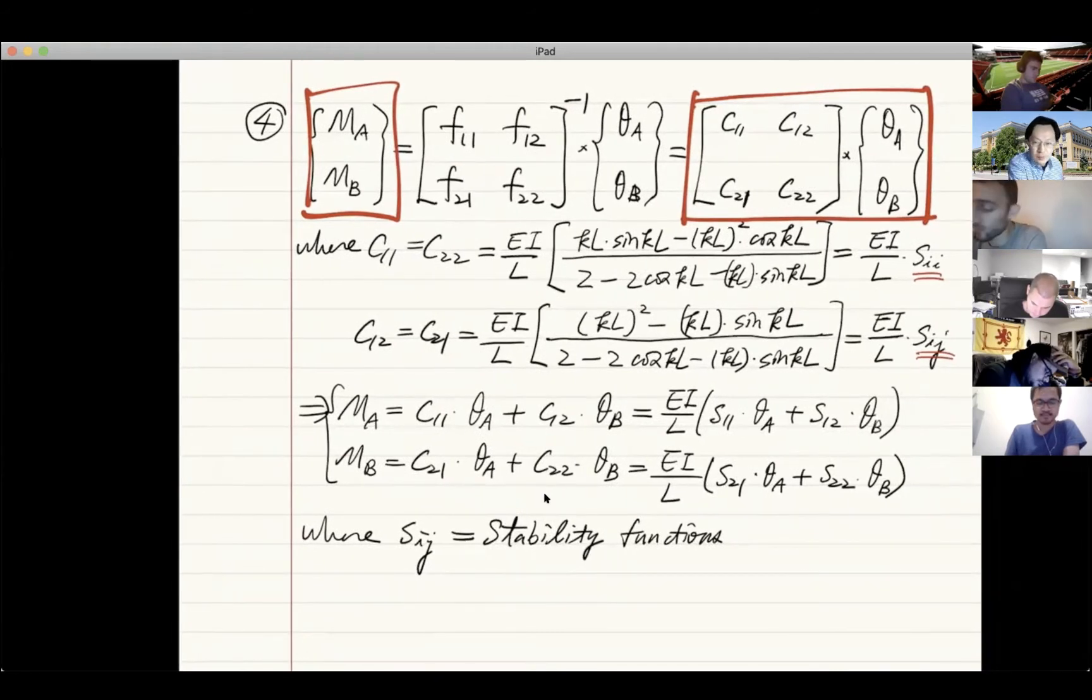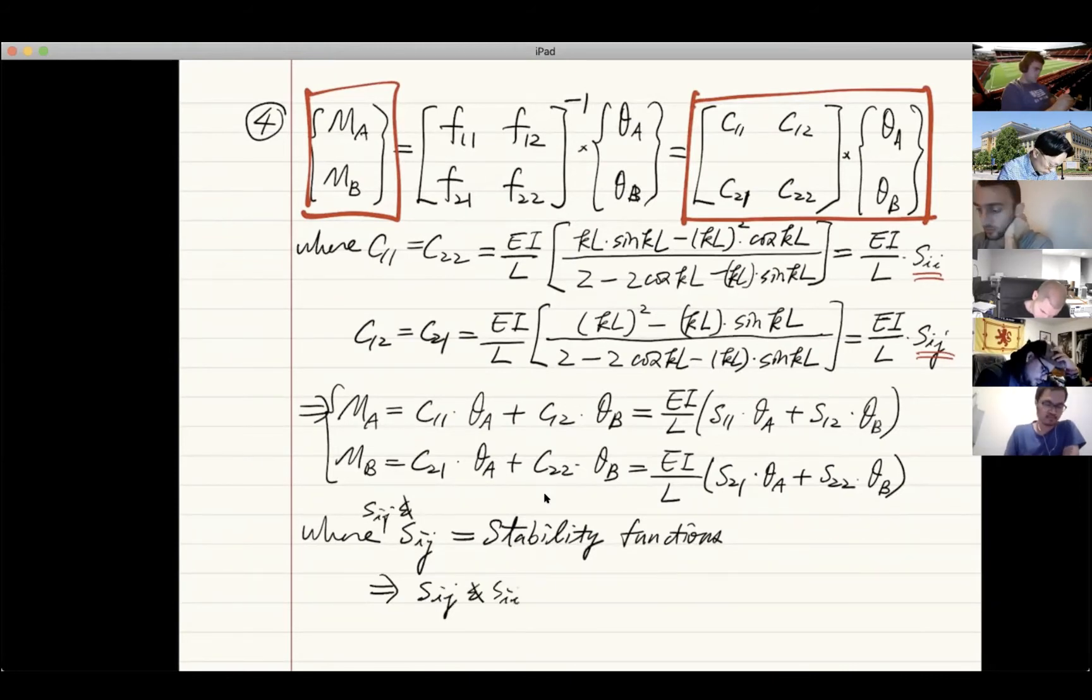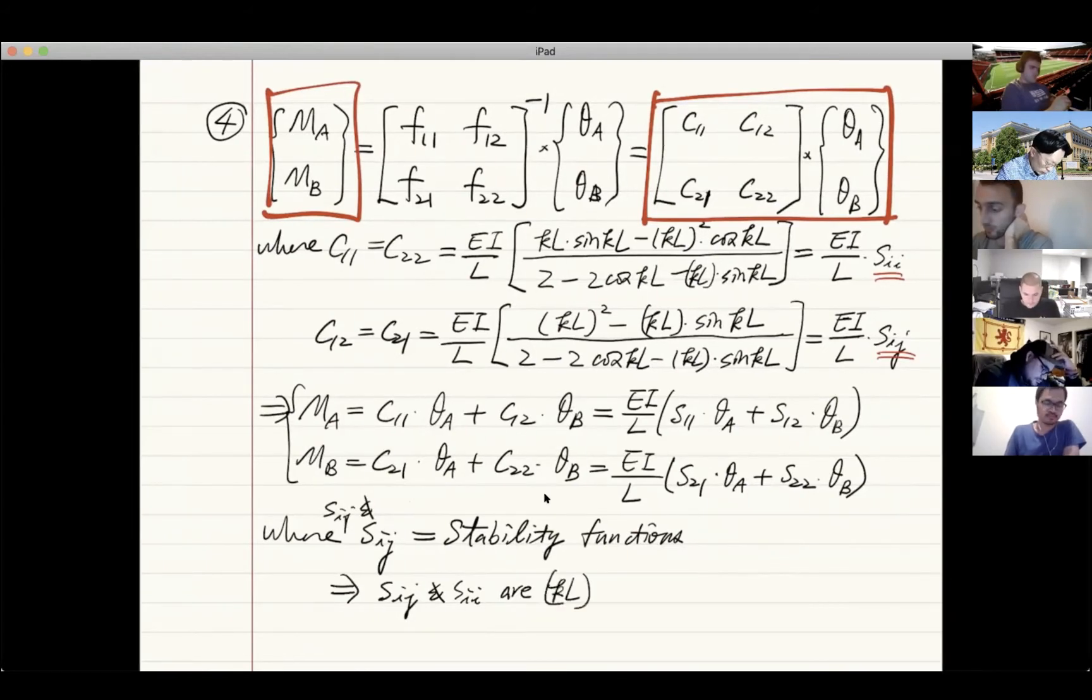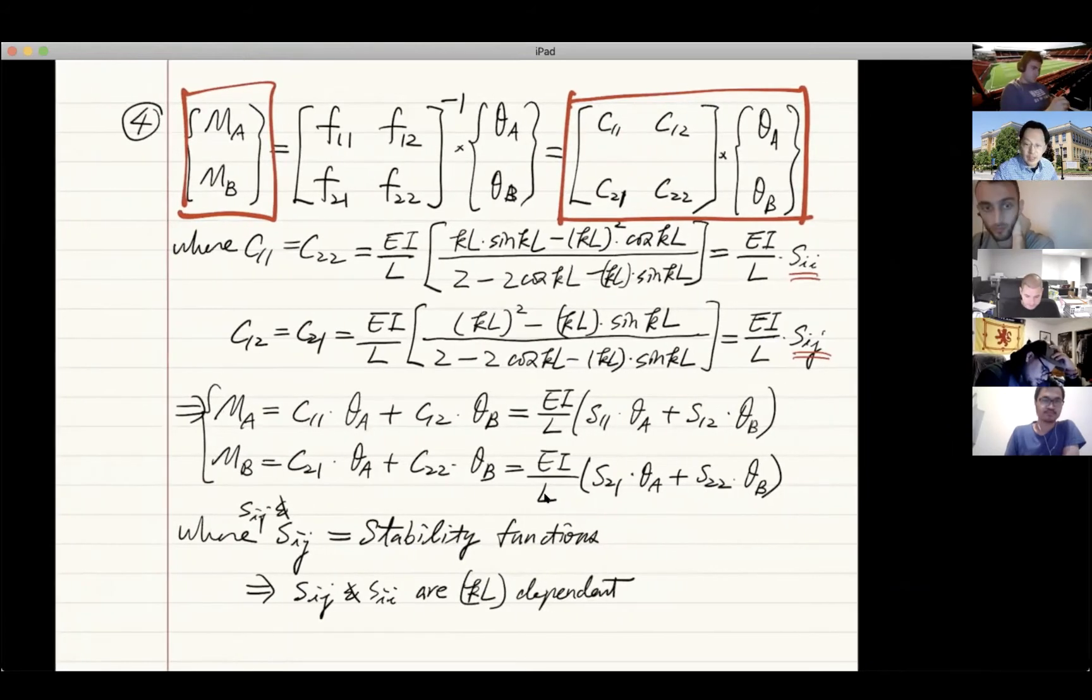Why they are called stability functions? Because sii or sij, and of course let's be complete, sii and sij are kl dependent. If they are kl dependent, they are p dependent. That's why they are called stability functions.